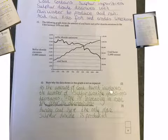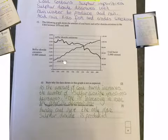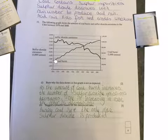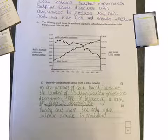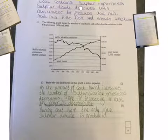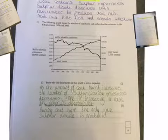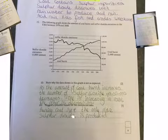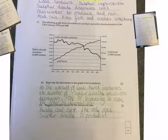As the amount of coal burn increases, the number of sulfur dioxide emissions are decreasing. One is at an increasing rate, the other is at a decreasing rate. What you would expect to see is coal burning increasing and sulfur dioxide emissions increasing also because burning coal releases sulfur impurities. Suggest a possible reason for this unexpected data. Burning coal isn't the only place that sulfur dioxide is produced, so burning coal cannot be directly linked to the amount of sulfur dioxide emissions.